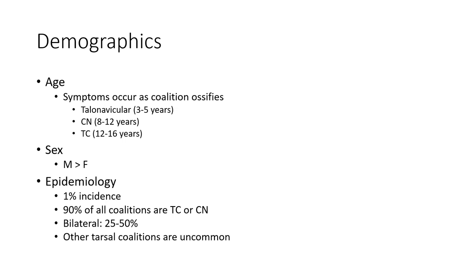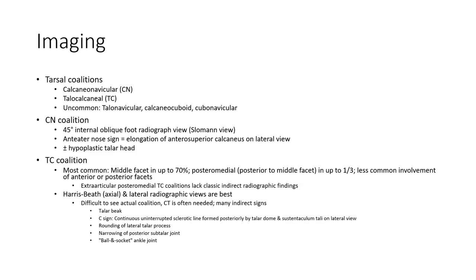Bilateral occurrence in 25–50%. Other tarsal coalitions are uncommon. Types of tarsal coalitions include calcaneonavicular (CN) and talocalcaneal (TC). Uncommon types include talonavicular and calcaneo-cuboid-navicular. The calcaneonavicular coalition accounts for 45% of internal cases.